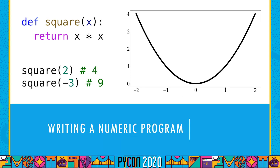We should start with what is a numeric program in Python, since these will be the inputs to automatic differentiation. All a numeric program is, is one that has numbers go in and have numbers come out. The input can be one or more numbers, but for most automatic differentiation programs, the output ought to be a single number. If we have one input and one output, we can look at a graph of these functions — we put the input on the x-axis and the output on the y-axis, that's the vertical axis.